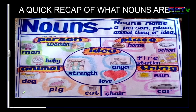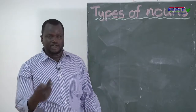Examples of names of animals: dog, pig, and cat. Examples of names of places: home, school, fire station. Examples of names of things: sun, car, and chair. Examples of names of ideas or feelings: anger, strength, and love. That was just a quick recap — I hope this has refreshed your memories about what nouns are.